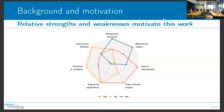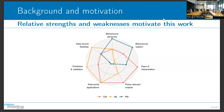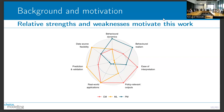If you contrast these three approaches - where the middle is bad and the outside is good - none of these approaches is clearly the best overall. Machine learning has greater data source flexibility and greater prediction performance, but behavioral realism is a bit of a limitation, and policy-relevant outputs are what it really struggles with.